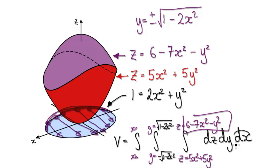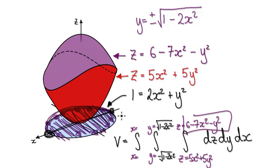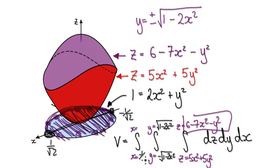Looking at the x limits: you're scanning from one edge of the ellipse to the other, all the way from x equals negative 1 over root 2 to x equals positive 1 over root 2. So in terms of x you're scanning from negative 1 over root 2 to positive 1 over root 2.